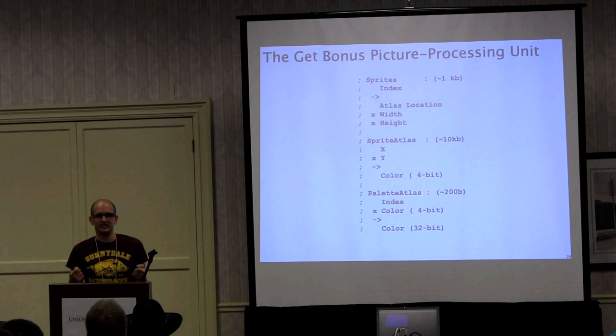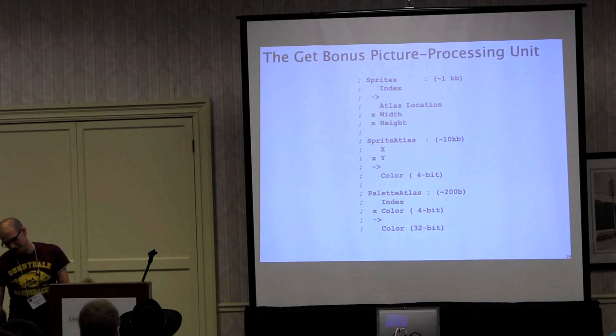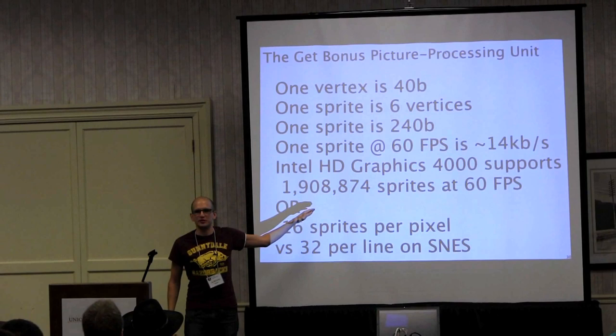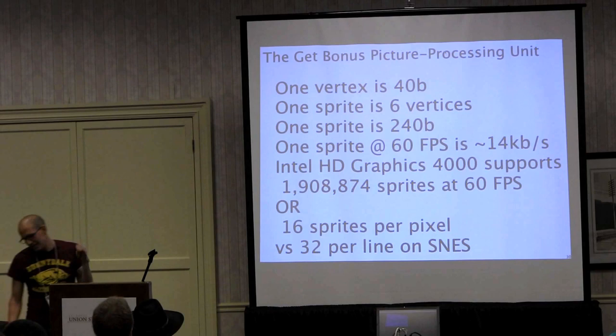Graphics cards are designed for having like 4 gigabytes of data, and we use 11 kilobytes — we're barely scratching the surface. Altogether, we can display 2 million sprites at 60 frames per second, corresponding to 16 per pixel, in contrast to the Super Nintendo's 32 per line.